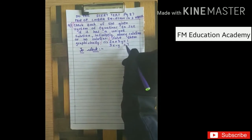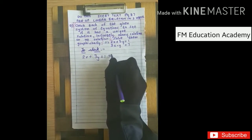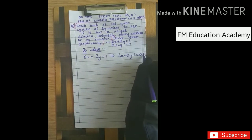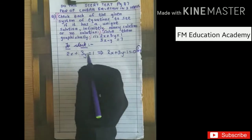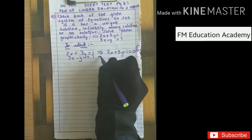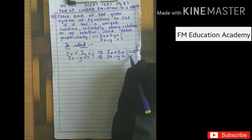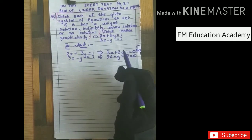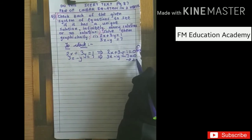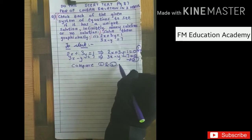First, let's make these equations in standard form. 2x plus 3y equals 1 can be written as 2x plus 3y minus 1 equals 0 — this is my first equation. Then 3x minus y equals 7 can be written as 3x minus y minus 7 equals 0. Now both equations are of the form a1x plus b1y plus c1 equals 0 and a2x plus b2y plus c2 equals 0. I will compare equation 1 and 2.